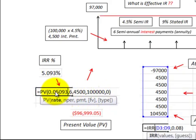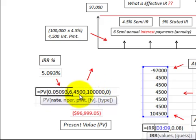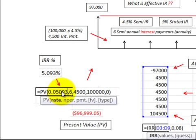To cross-check, we use the Present Value function in Excel, inputting that internal rate of return, the six payments of $4,500, and the maturity value of $100,000. The result comes out to approximately $97,000, confirming that 5.093% per period is the correct effective interest rate — or market interest rate — on this bond.